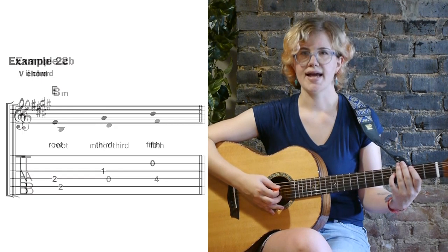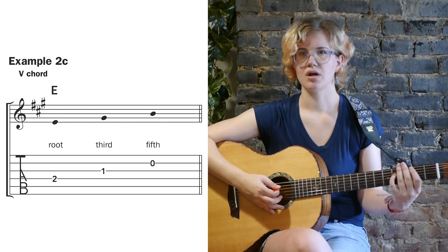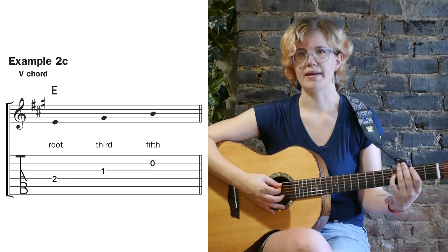Example 2C shows us the notes in E major, the major 5 in the key of A. The notes are E, G sharp, and B.